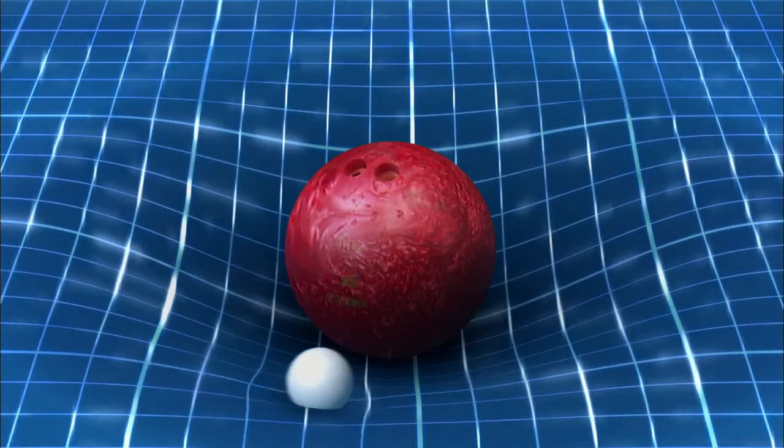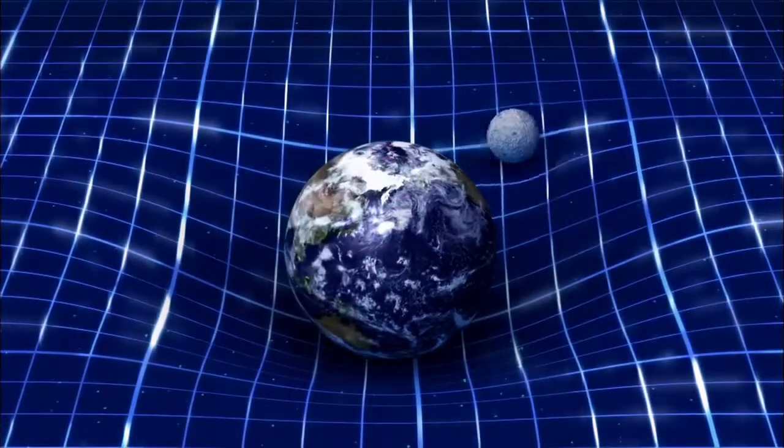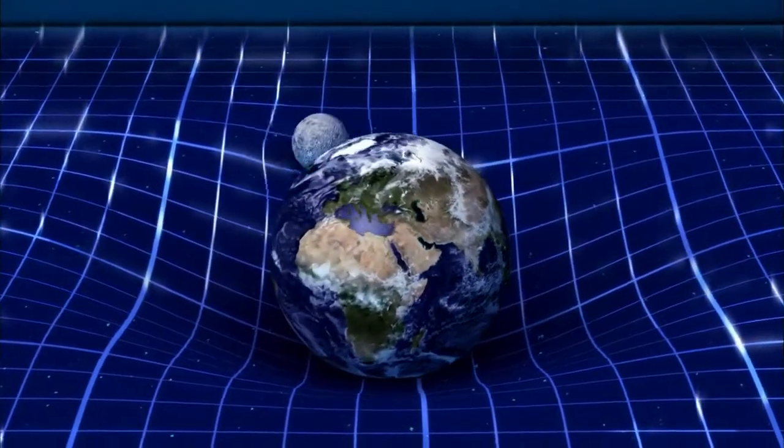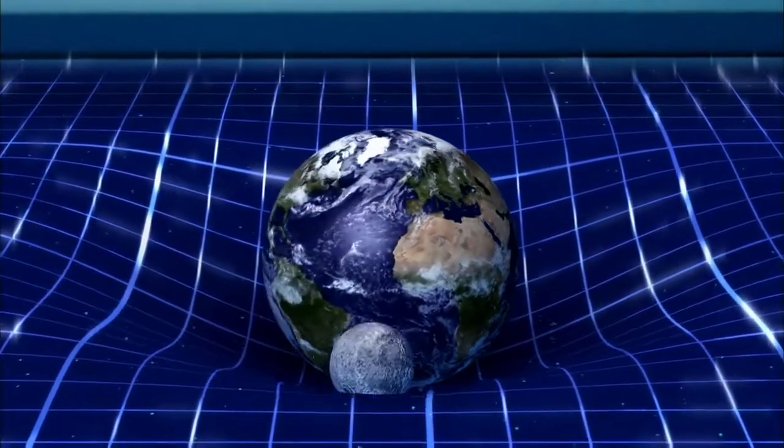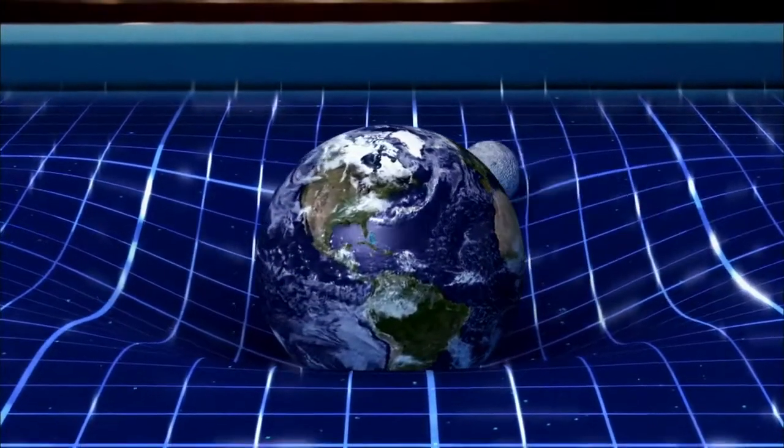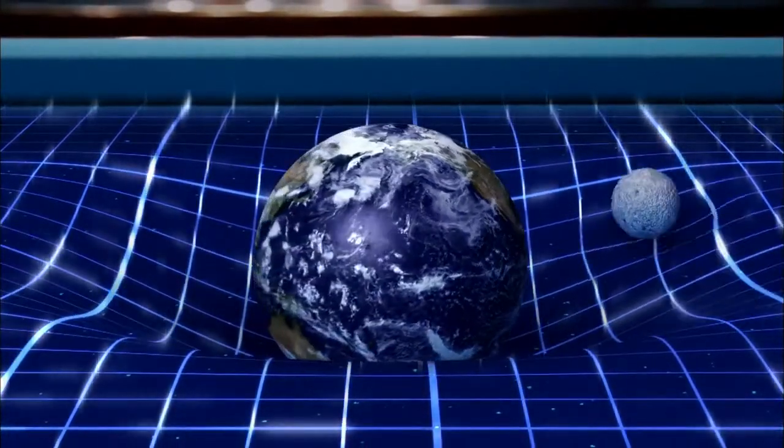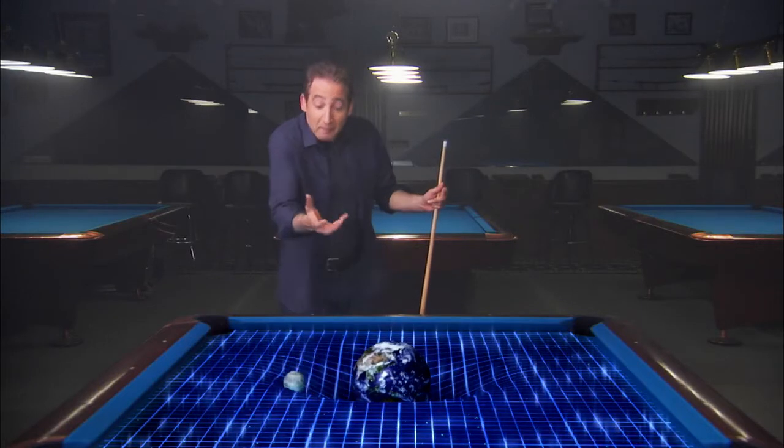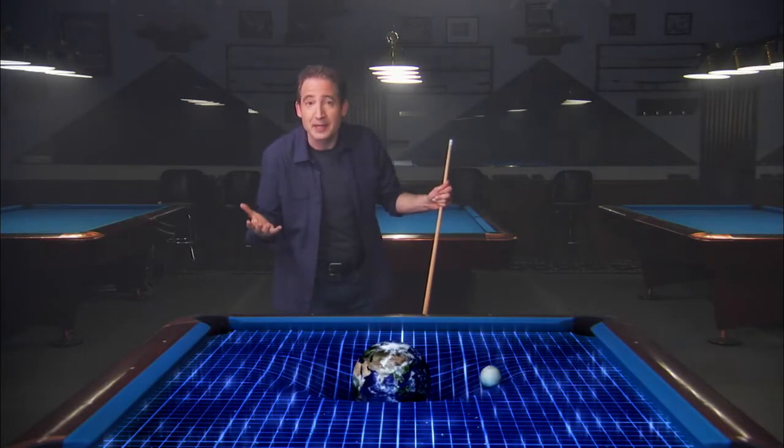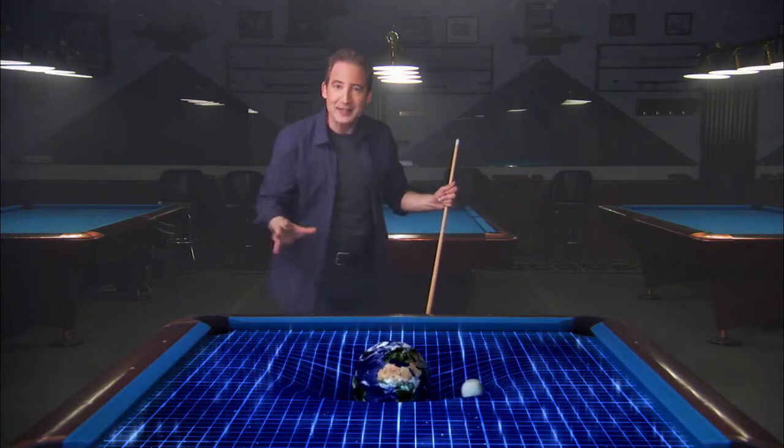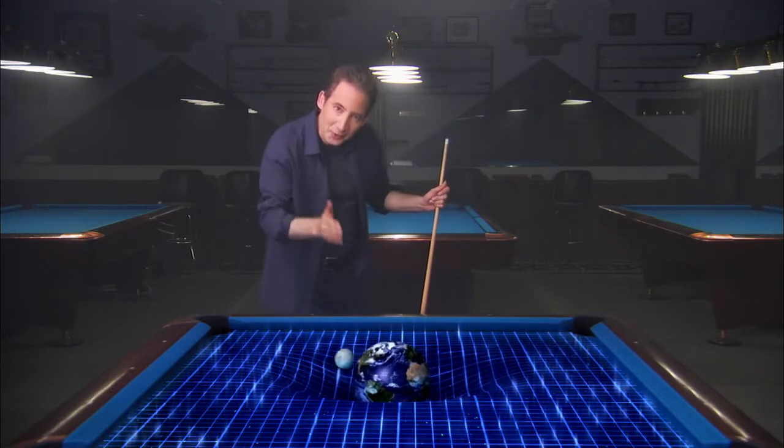And this, Einstein realized, is how gravity actually works. It's the warping of space-time caused by the objects within it. In other words, gravity is the shape of space-time itself. The moon is kept in orbit, not because it's pulled to the Earth by some mysterious force, but rather because it rolls along a curve in the space-time fabric that the Earth creates.